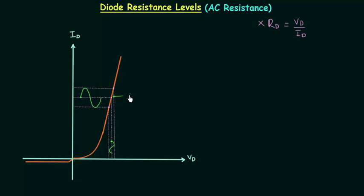Let's say the operating point is Q, where Vd is equal to 0 and Id is also equal to 0. When Vd increases in this time interval, the operating point Q will move up, and finally the operating point reaches Q1 when we have the maximum voltage and maximum current. After this, current and voltage start decreasing and the operating point moves back. When voltage and current are again equal to 0, the operating point is again Q.